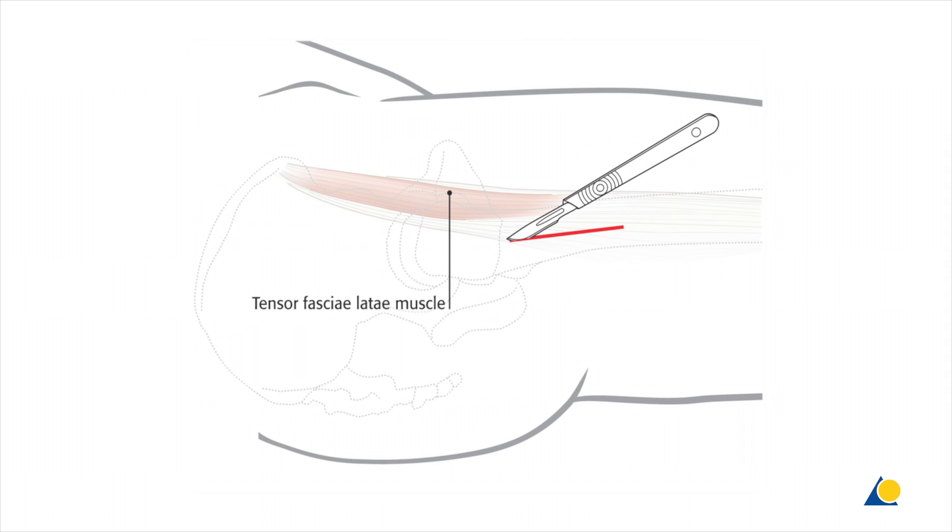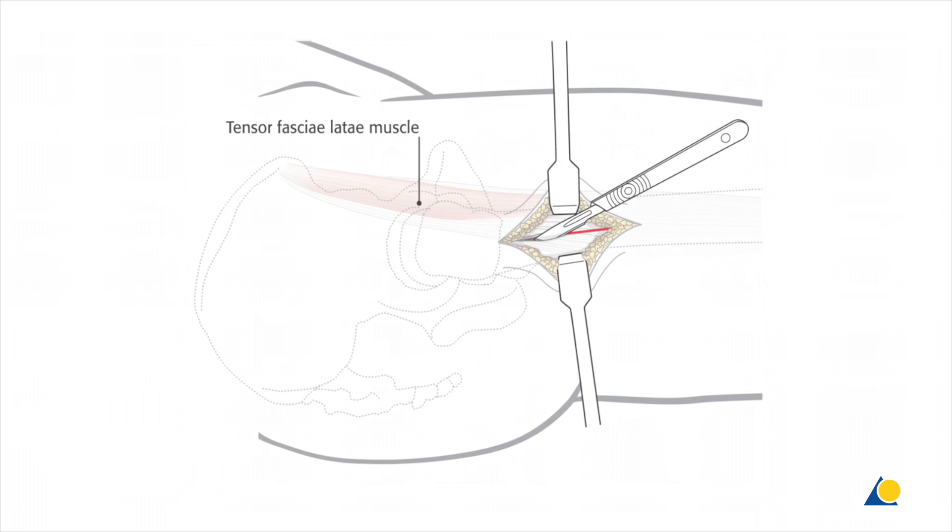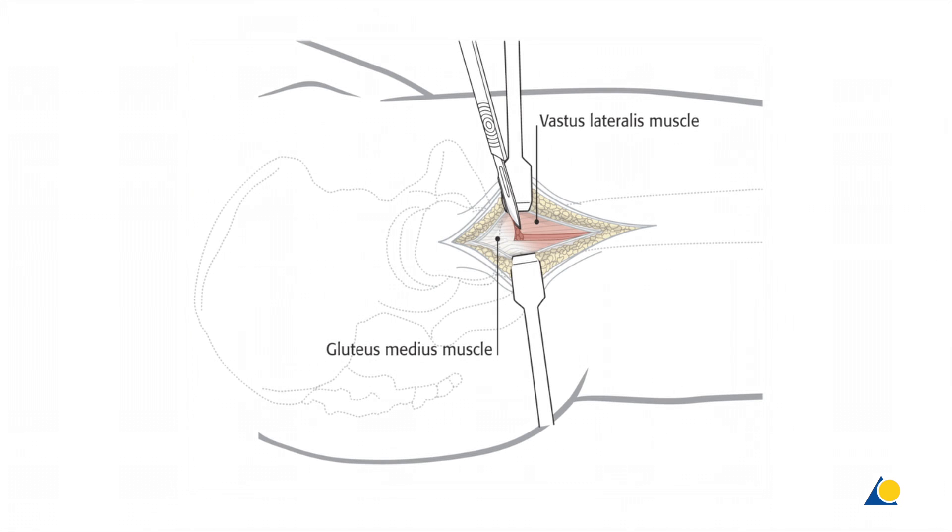The surgical approach is a standard anterolateral approach to the proximal femur through a straight lateral incision. After the skin is opened and the subcutaneous tissue incised, the fasciae latae is opened lengthwise. The vastus lateralis muscle, which is carefully detached at the insertion in an L-shape, is exposed.